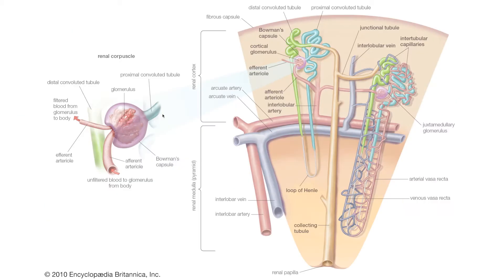Nephrons are made up of a round structure called the glomerulus. The glomerulus has an afferent arteriole coming into it, forming capillaries inside, and then exiting out as the efferent arteriole.